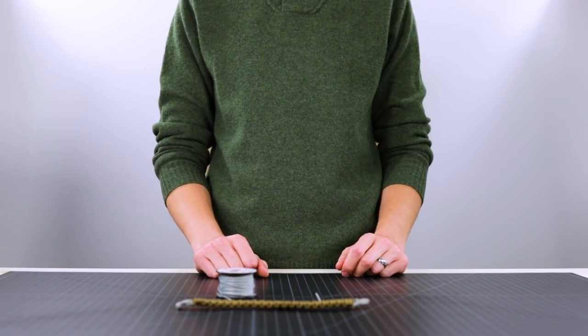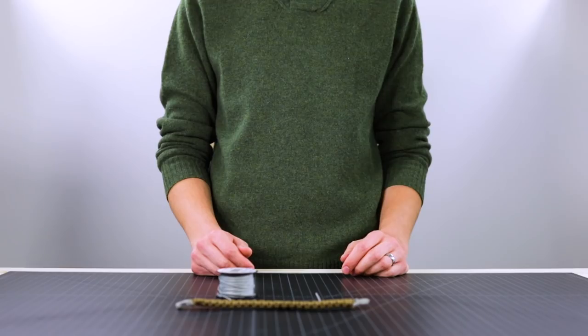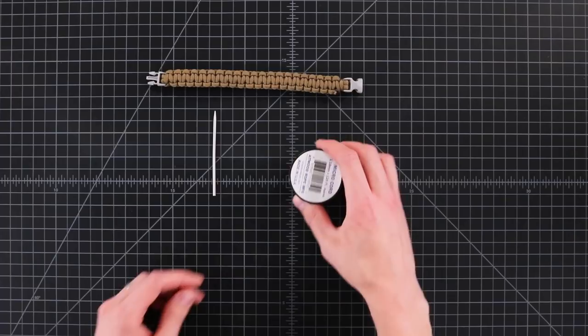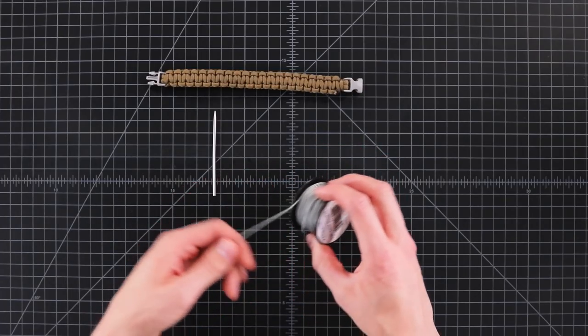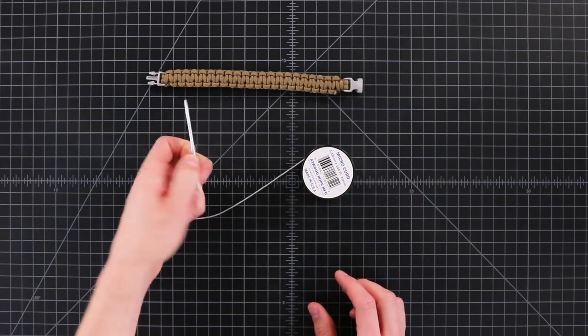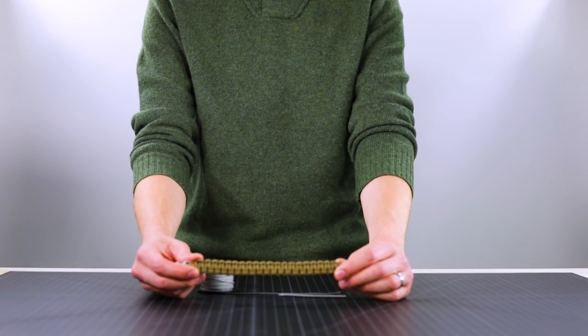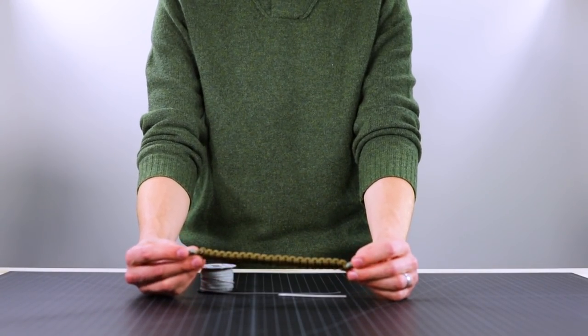If you're new to lacing techniques this is a good place to start. All you need to begin is a cobra weave bracelet, micro cord, and a type 1 fid. If you don't know how to make a cobra bracelet we provided a link in the description to show you how to do that.